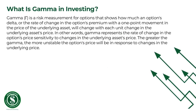GAMMA is a risk measurement for options that shows how much options delta, or the rate of change in the options premium with a one-point movement in the price of the underlying asset, will change with each unit change in the underlying asset's price. In other words, GAMMA represents the rate of change in the options price sensitivity to changes in the underlying asset's price.